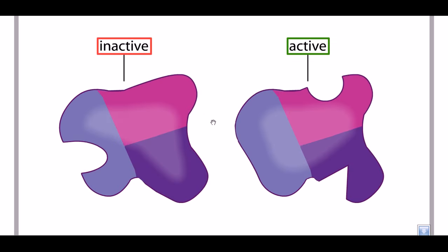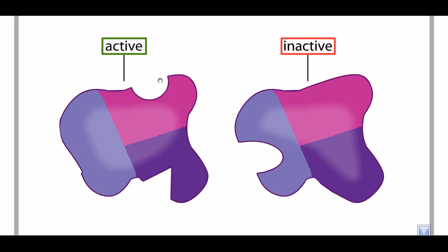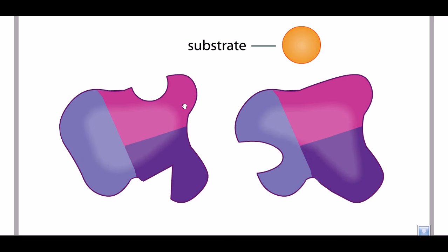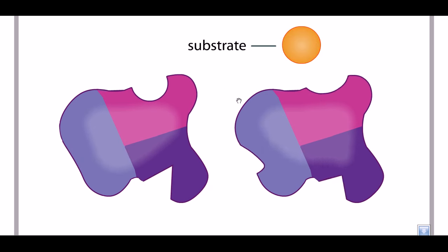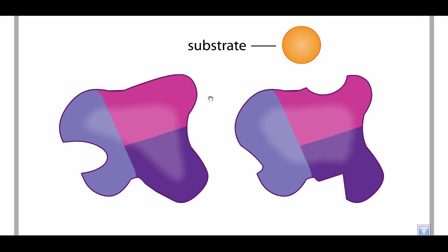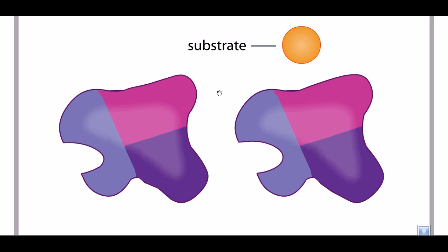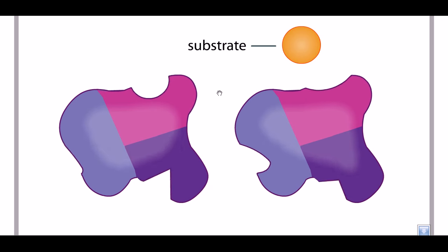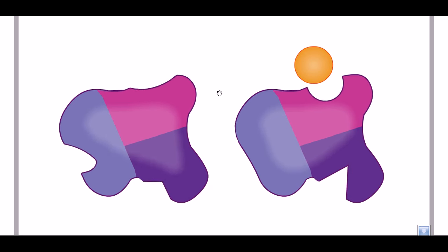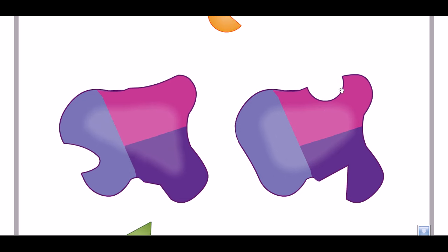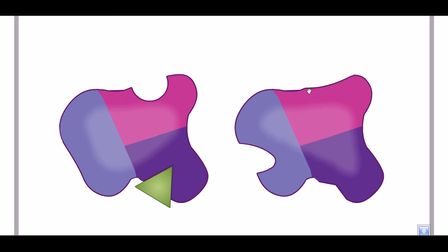In this kind of enzyme, we have both active and inactive states, and this active and inactive state rapidly changes — making the enzyme sometimes active and sometimes inactive. When the enzyme is in the active state, it can easily bind to the substrate.